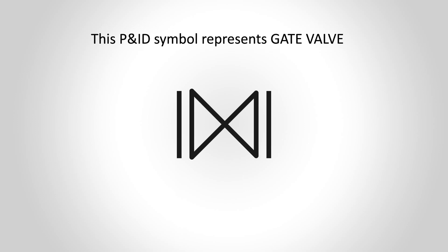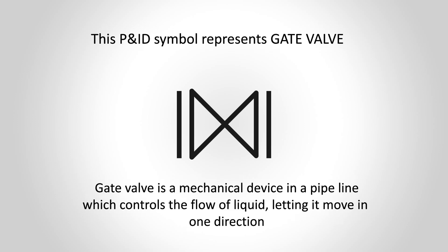This BNAD symbol represents a gate valve. A gate valve is a mechanical device in a pipeline which controls the flow of liquid, letting it move in one direction.